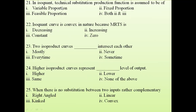Question 21: In isoquant, the technical substitution and the production function is assumed to be of variable proportion. In isoquant we study the substitution between two inputs, so it will obviously be in variable proportion.